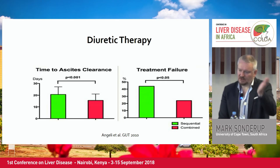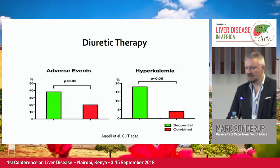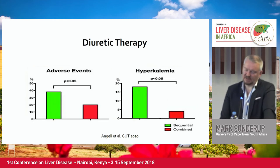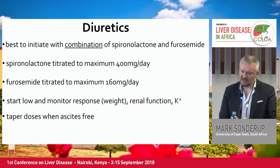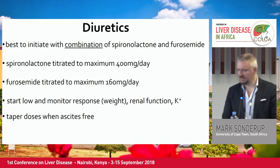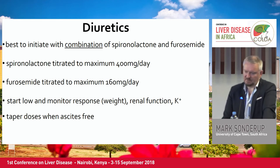For diuretics, combination therapy ab initio is better than sequential therapy — start your loop diuretic and spironolactone together rather than going from one to the next. There is better time to treatment, better time to response, and better adverse events profile. Start combination therapy of spironolactone and furosemide, titrating upwards to a maximum of 400 mg per day of spironolactone and up to 160 mg per day of furosemide. Again, start low and go slow, monitoring for adverse events. When patients' ascites responds, please taper the dose.